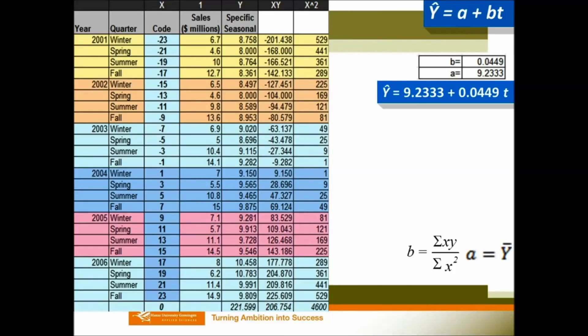If you get your mean and a, you can formulate your equation. Y hat equals 9.23 plus 0.04 times t. This is your prediction equation.